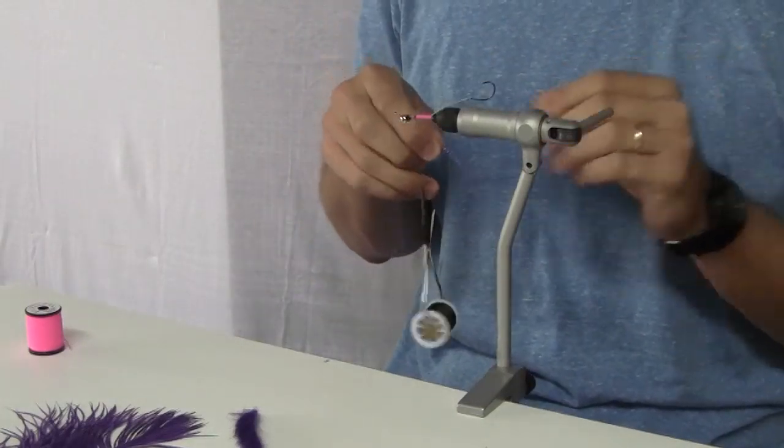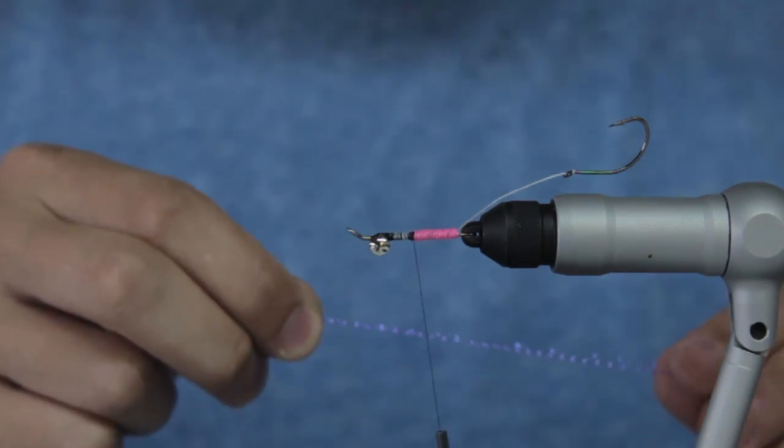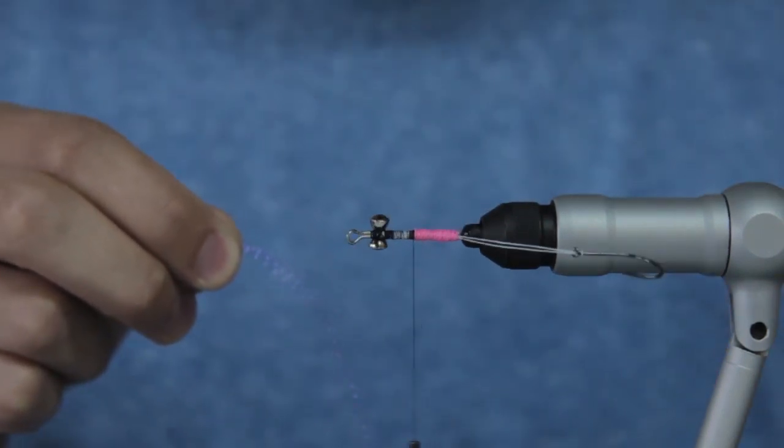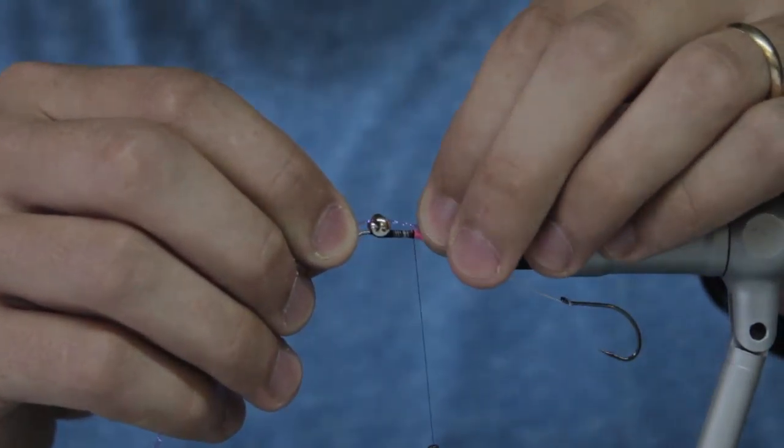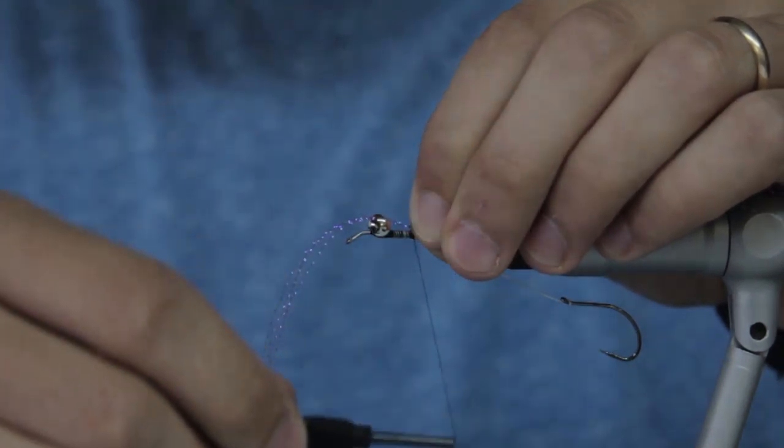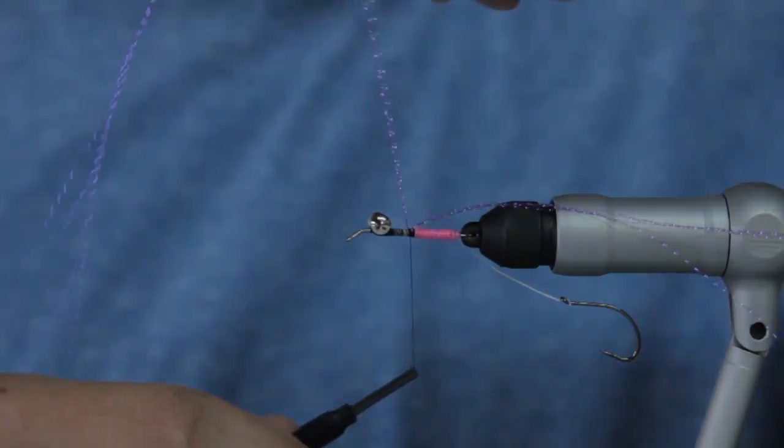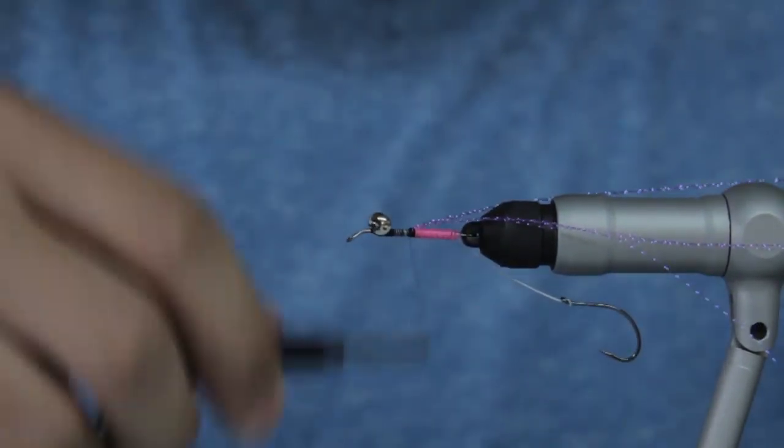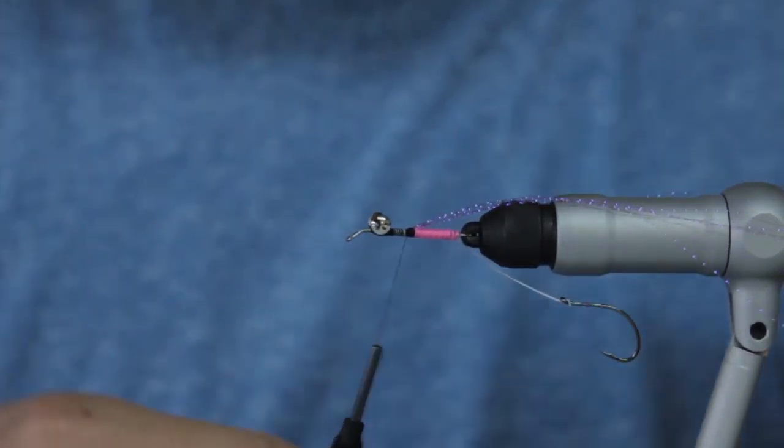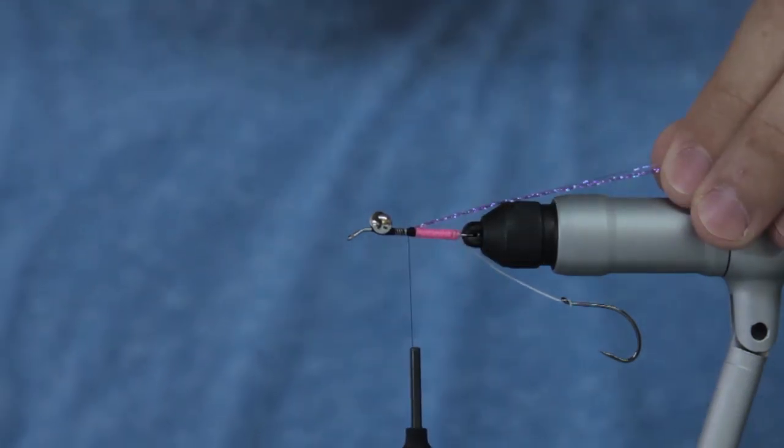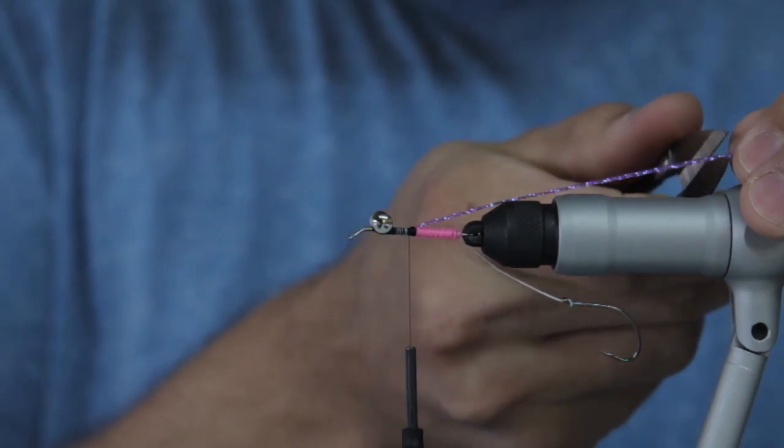We'll flip the vise around and we will tie in those four strands. Cinch it down, pull the four strands back, lock those down in place. Then we'll measure out to where the hook is just about out, we'll go back a little bit farther and we'll trim it. We can taper it later.